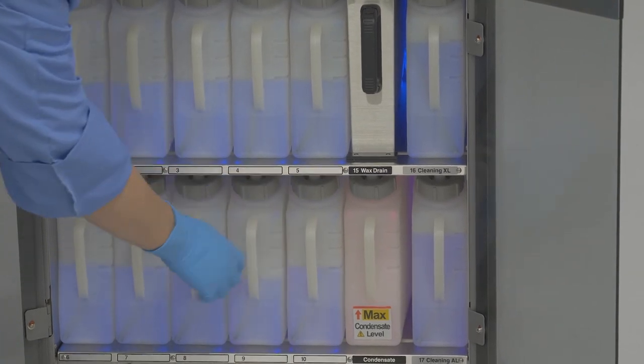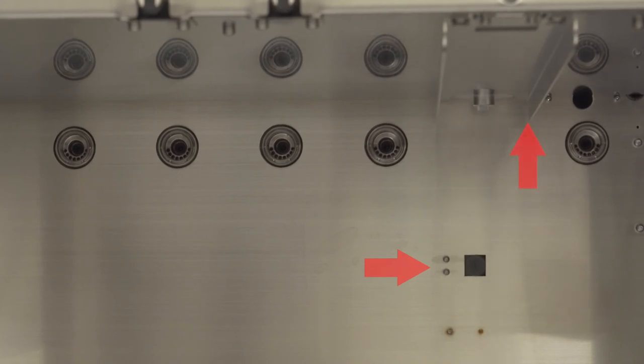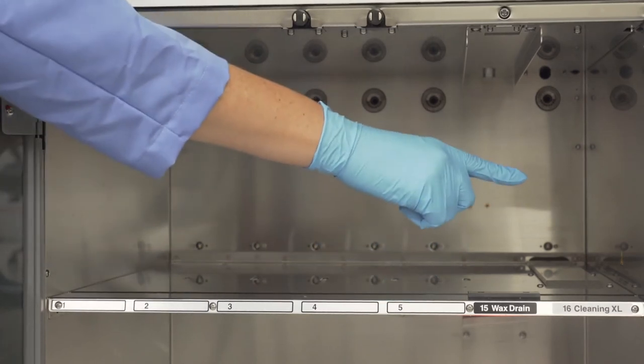On the back of the top shelf, you will notice a black square sensor and metal guide. The metal guide allows the waste wax drain container to be positioned correctly and the sensor informs the software that the container is in place.